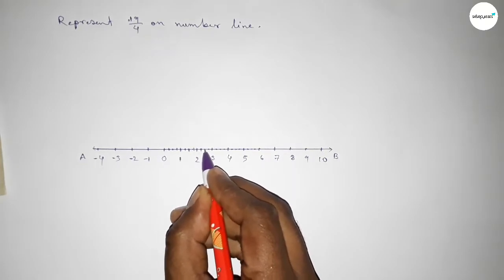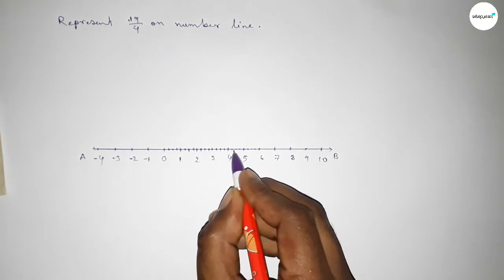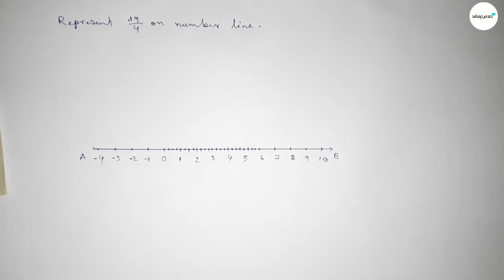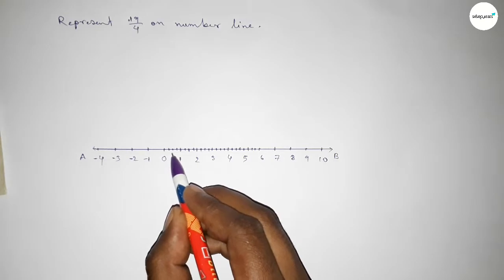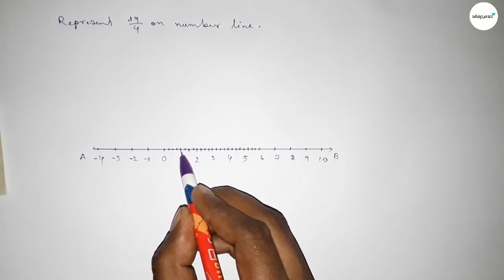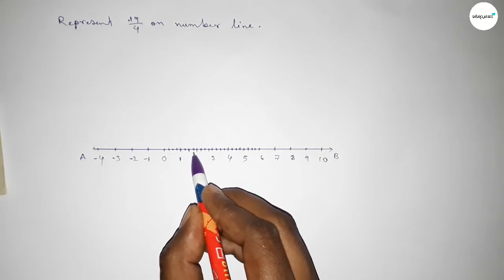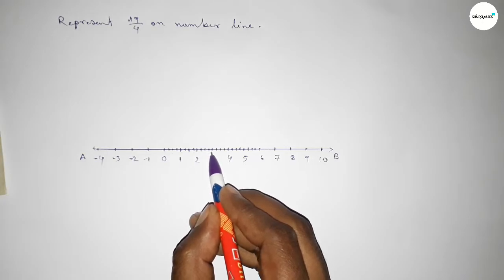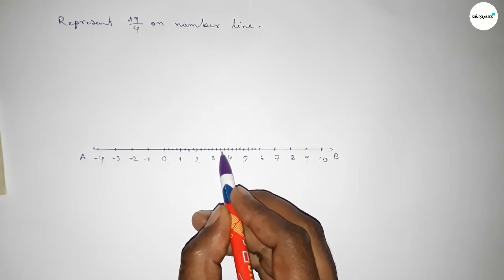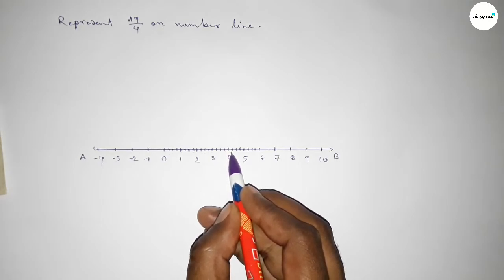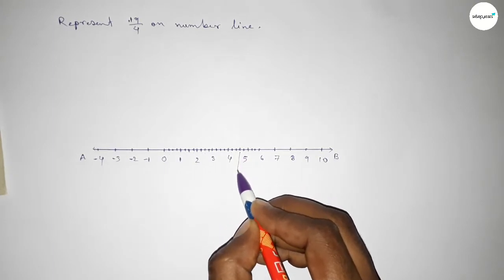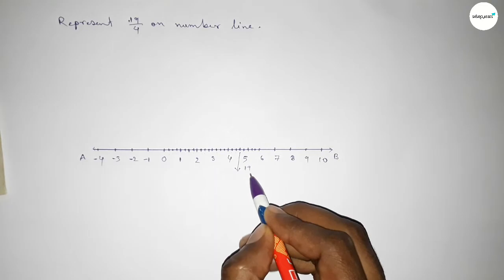Now mark the numbers with deep color to understand perfectly. This is starting number zero. So this is: one over four, two over four, three over four, four over four, five over four, six over four, seven over four, eight over four, nine over four, ten over four, eleven over four, twelve over four, thirteen over four, fourteen over four, fifteen over four, sixteen over four, seventeen over four, eighteen over four, nineteen over four. So this is nineteen over four on the number line.